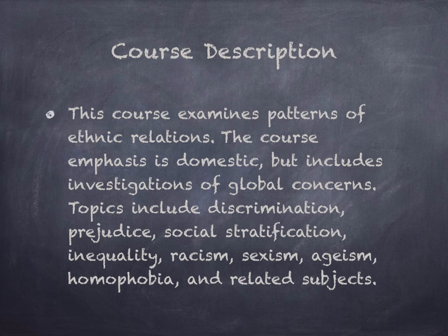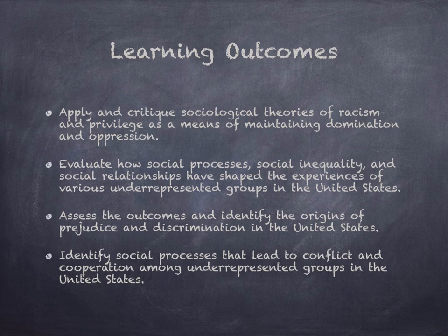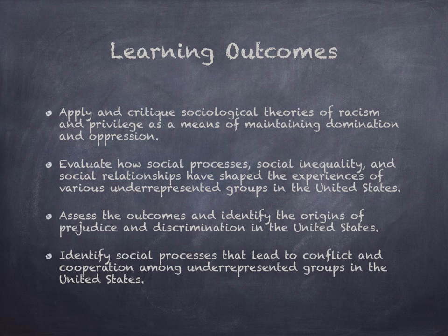Topics include discrimination, prejudice, social stratification, inequality, racism, sexism, ageism, homophobia, and other related topics. By the end of this class, you should be able to apply and critique sociological theories of racism and privilege as a means of maintaining domination and oppression. You should be able to evaluate how social processes, social inequality, and social relationships have shaped the experiences of various underrepresented groups in the United States, and assess the origins and outcomes of prejudice and discrimination, as well as identify social processes that lead to conflict and cooperation among underrepresented groups.